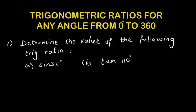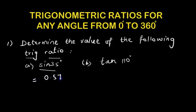Let's say we're asked to determine the value of sine 35. We know 35 degrees is not a special angle, so whenever we have to find the trigonometric ratio for an angle that is not a special angle, we use a calculator. We just plug in sine 35 and get the answer: 0.5736, up to four decimal places.